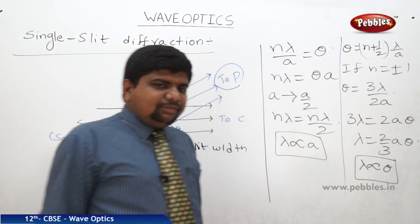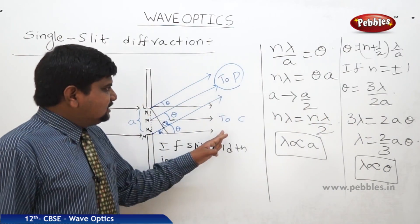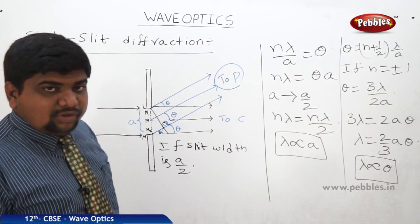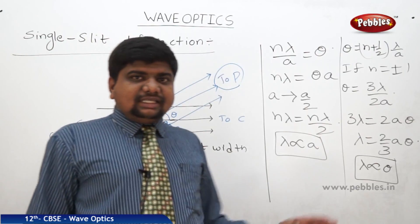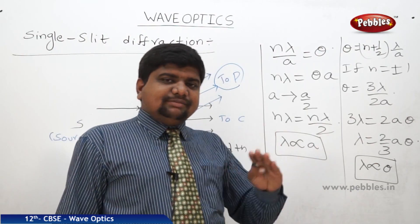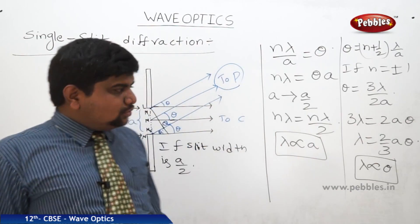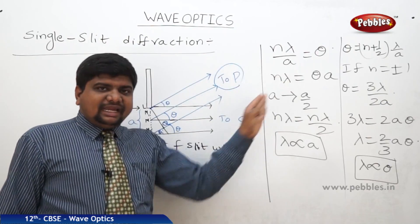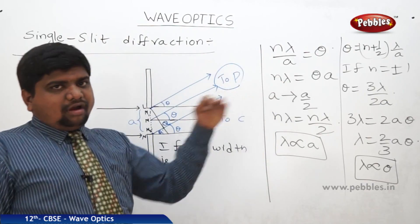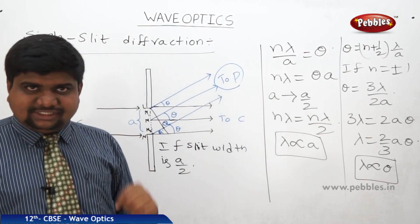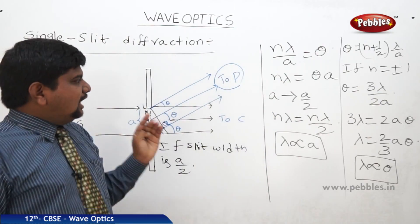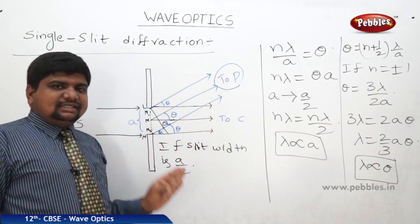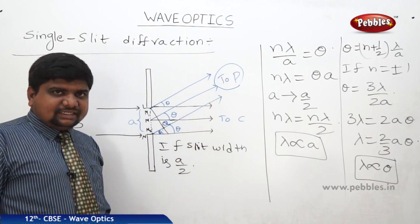Whatever may be the central fringe, and whatever may be the upper and lower fringes, they have a similar manner to incident on the screen and to form the bright and dark alternative fringes. Like this, we can understand single slit diffraction.